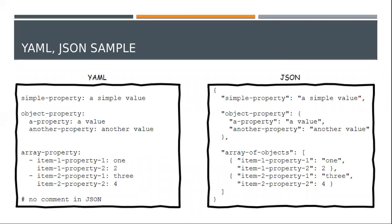Here you can see a YAML and JSON sample side by side. On the right side is JSON; on the left side is YAML. In JSON, the first line is a simple property with a value — both in double quotes — whereas in YAML there are no double quotes; the key and value are separated by a colon. The second example shows an object property as the key with a JSON object as the value, containing two key-value pairs internally. In YAML, the nested items appear on new lines to represent the items in the object.